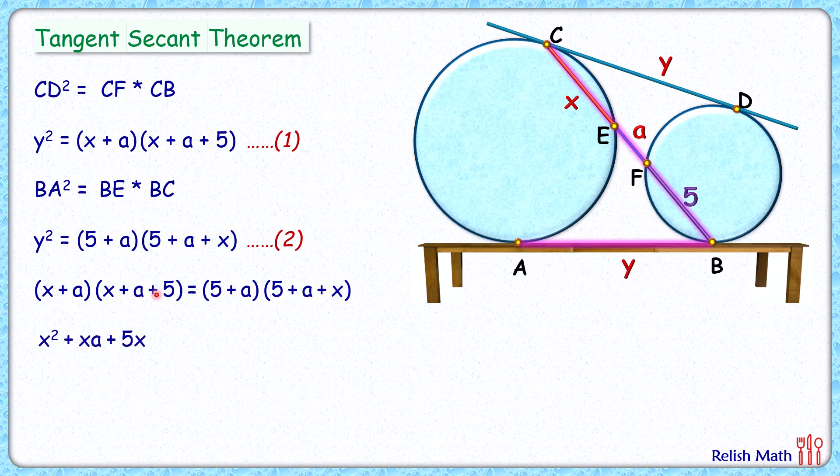And then multiplying a with these three terms. Okay, it's a big equation here, but let's see if something gets cancelled out. x times a is same as a times x; 5x and 5x is getting cancelled; a squared and a squared is getting cancelled; 5a and 5a is getting cancelled.